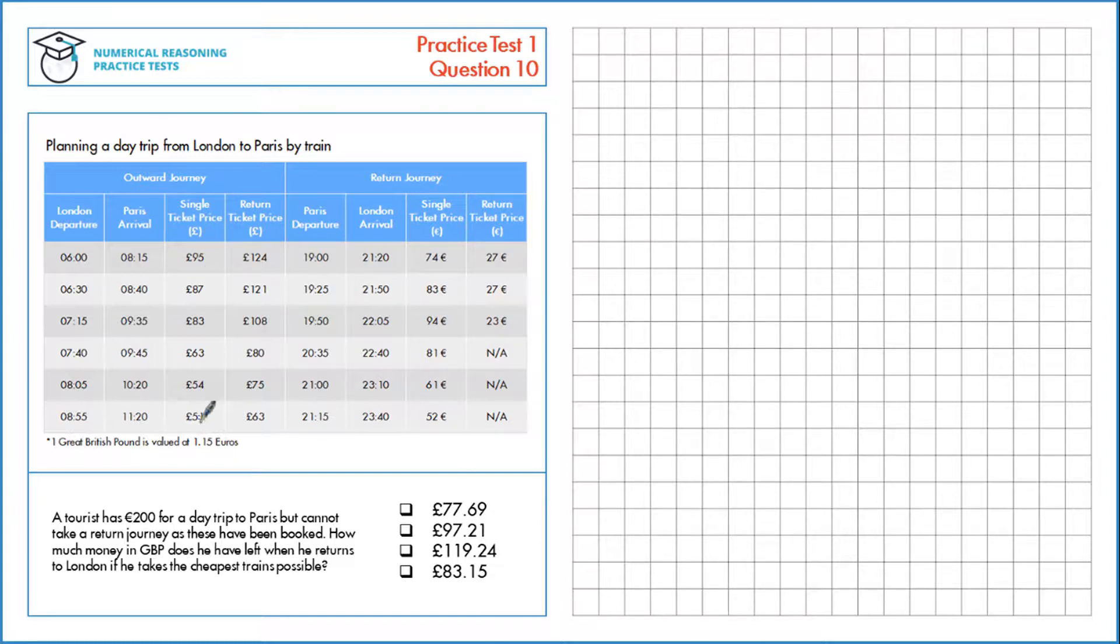So the cheapest single ticket here is £51 and the cheapest single ticket here is €52. So let's work through the journey.